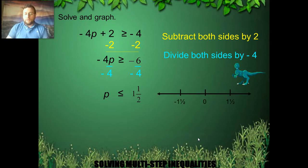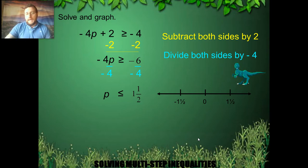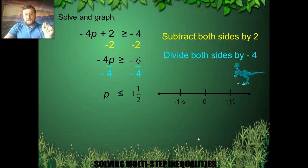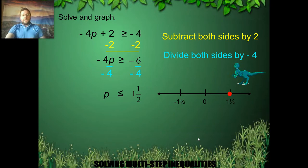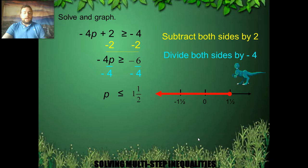Let's represent this graphically. A number smaller than 1 and a half — I'm including 1 and a half because it's smaller than or equal. So I shade the 1 and a half and go to the left. That's how you graphically represent this.